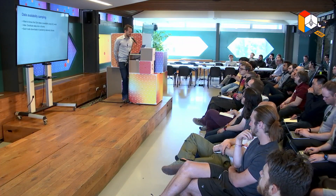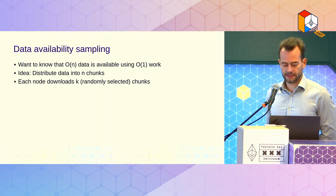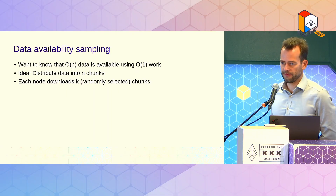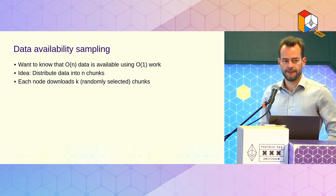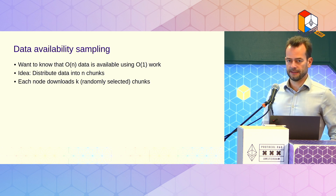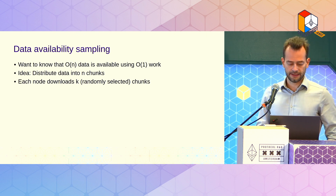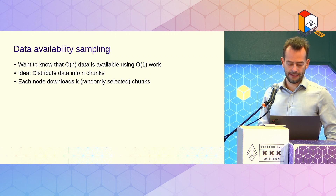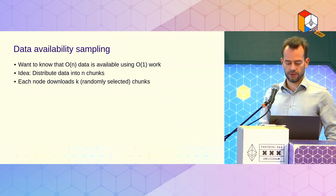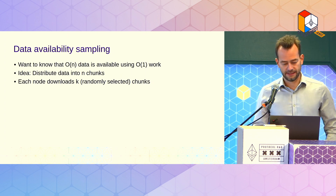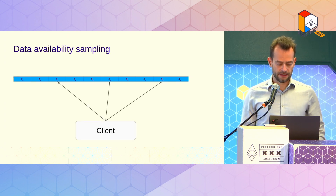How do we construct such a data availability layer? The basis is a technique called data availability sampling. In order to scale, we need some way of ensuring that data is available that scales — meaning that full nodes do not need to download all the data. In some way, we need to be sure that O(n) data is available using just O(1) work. The idea is we distribute the data into n chunks and each node only downloads k randomly selected chunks. So this is data availability sampling: the client picks a few random chunks and downloads those instead of downloading the full data.